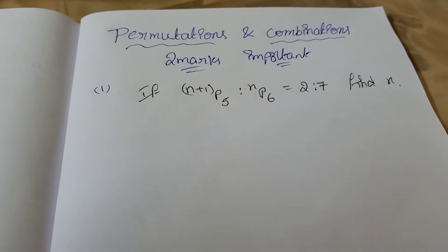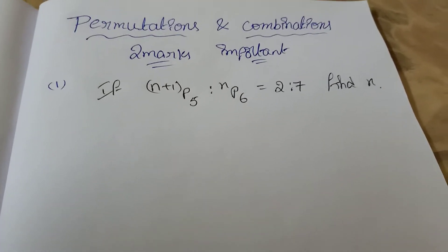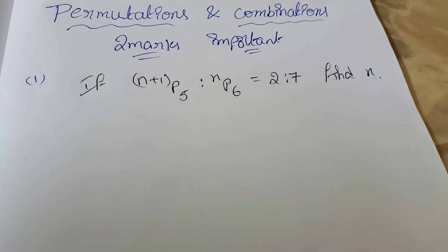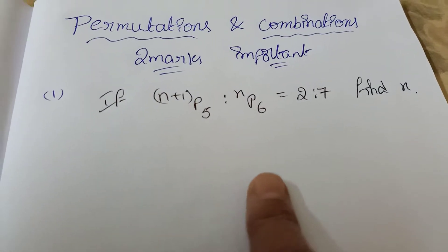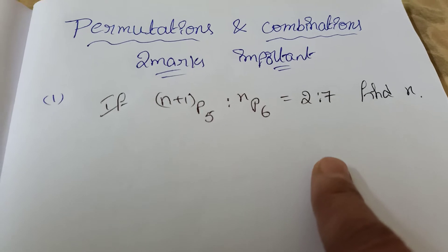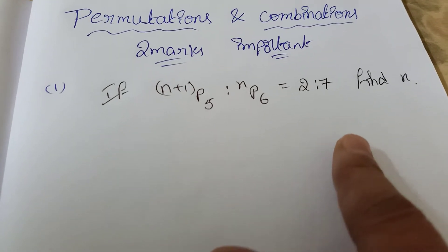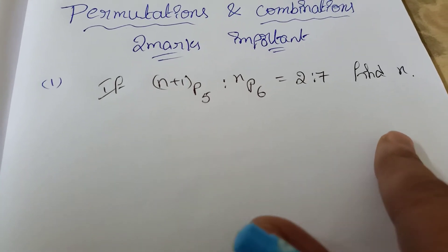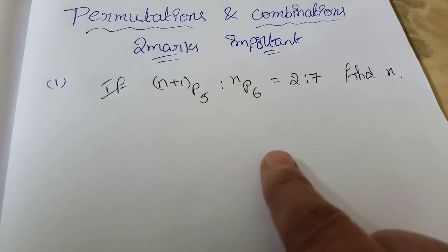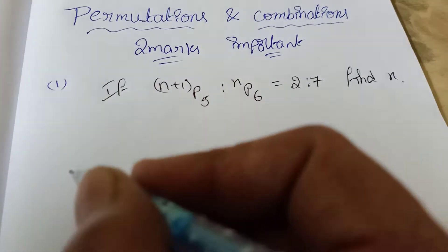Now here I am discussing important two-marks questions. Come to the point: if (n+1)P5 to nP6 is equal to 2 to 7, find n. The nPr formula I already discussed.